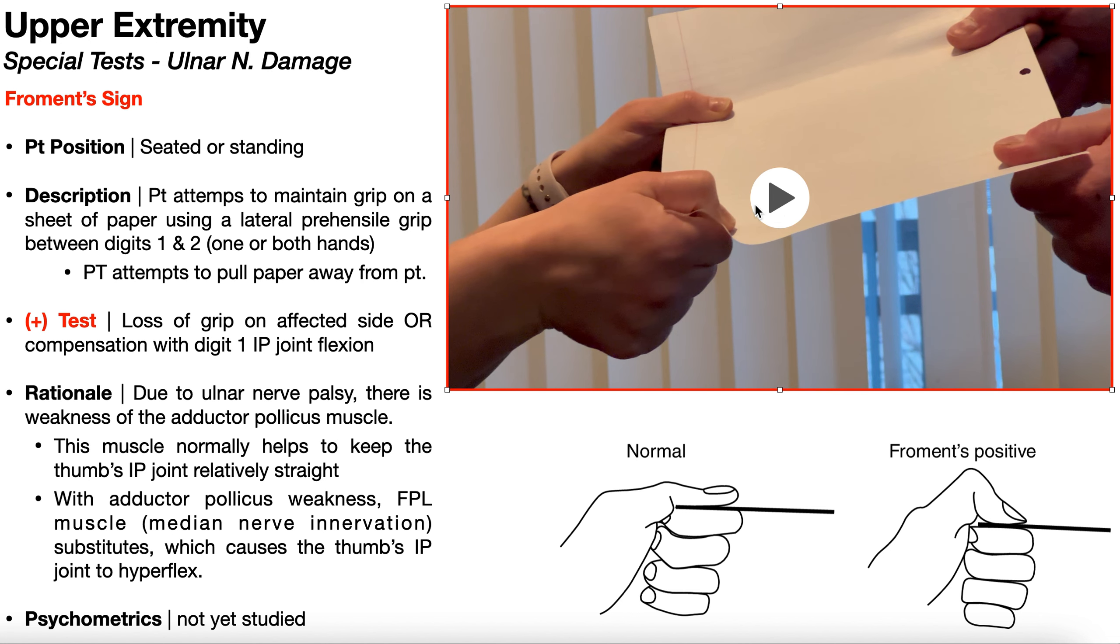Let's take a look at a positive test one more time. So right there, you see that compensation. That is Froment's sign on the right. You have this interphalangeal joint flexion at the thumb.